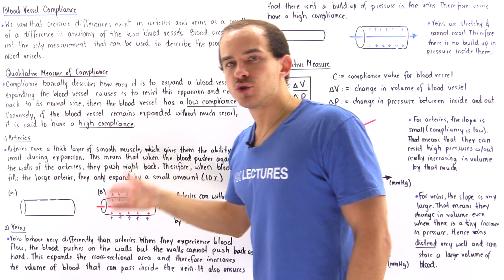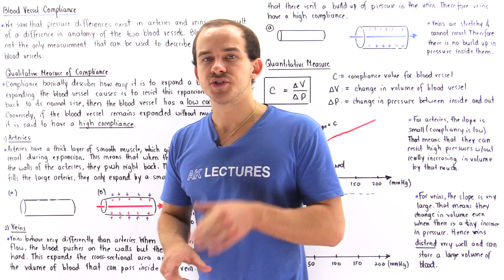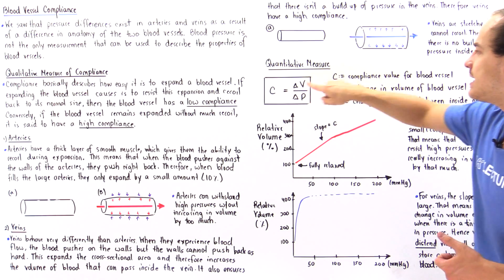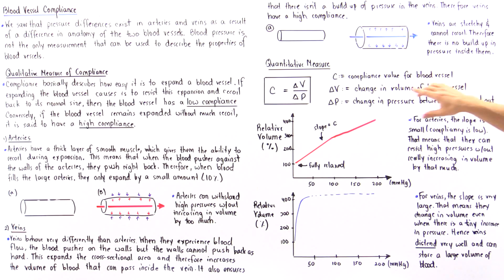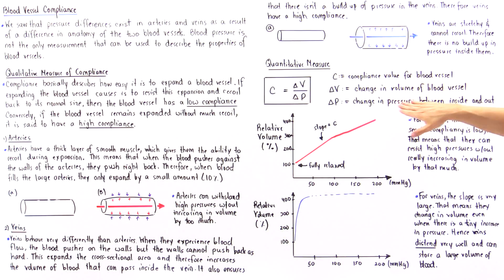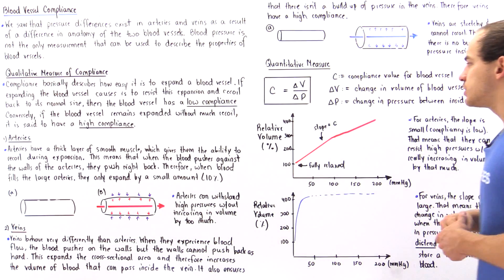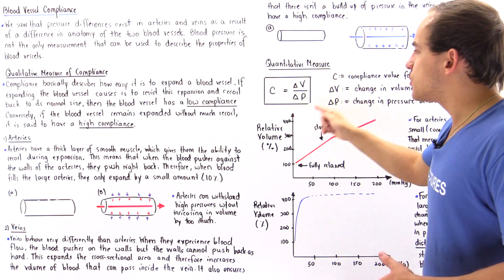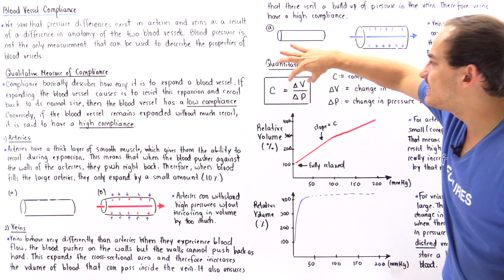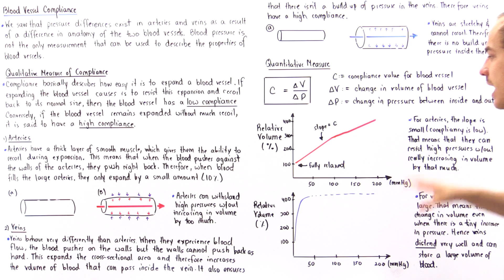This has been a qualitative discussion, but what about a quantitative one? Is there a formula that describes the compliance of our blood vessels? The answer is yes. This is a linear equation where C is the compliance of the blood vessel, delta V is the change in volume, and delta P is the change in pressure — the difference in pressure between the inside and outside portions of the blood vessel. Rearranging the equation gives us delta V equals C multiplied by delta P, which we can plot on an XY graph.